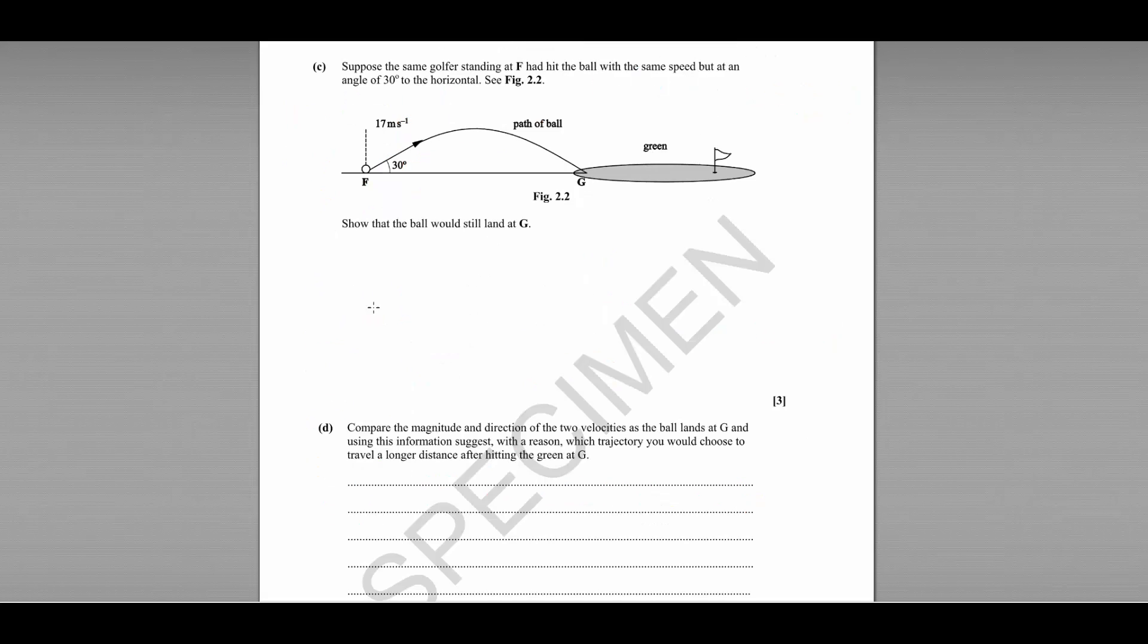Part C, we have the same golfer standing at F, hitting the ball with the same speed, but this time he's changed the angle to 30 degrees to the horizontal. We need to show that the ball would still land at G. This is worth three marks. There's a bit more to this one. So first of all, doing very similar steps to above, we'll find out what's going on in the vertical component. We're interested in the time it will take the ball to reach its highest point.